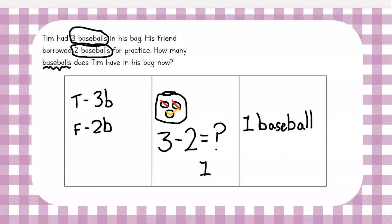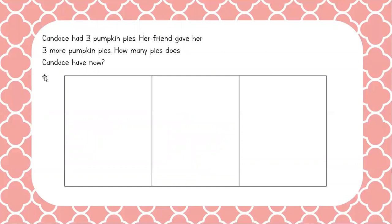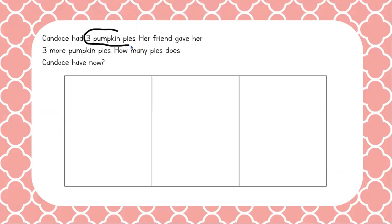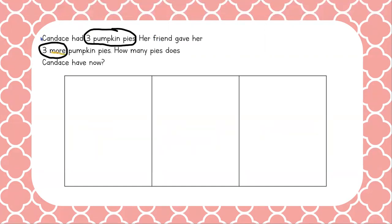Excellent work today. Let's go to problem number two. Problem number two reads: Candace had three pumpkin pies. Her friend gave her three more pumpkin pies. How many pies does Candace have now? Candace has three pumpkin pies — let's circle that, that's our important information. We're also going to circle 'three more' — that's one of our buzzwords, a clue for which math operation we are going to be doing.